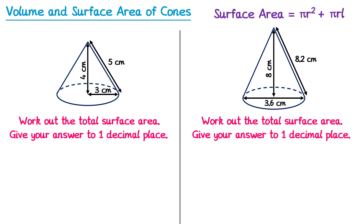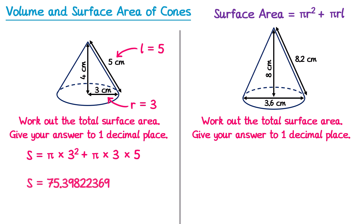For the first one: surface area = π × r squared. The radius is 3, so 3 squared, plus π × r (which is 3) × L (the slant height, which is 5). Typing this into the calculator and rounding to one decimal place gives 75.4 centimetres squared.